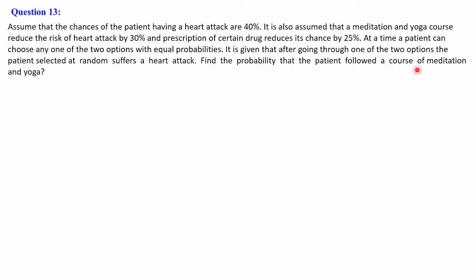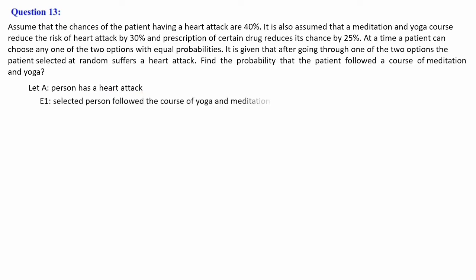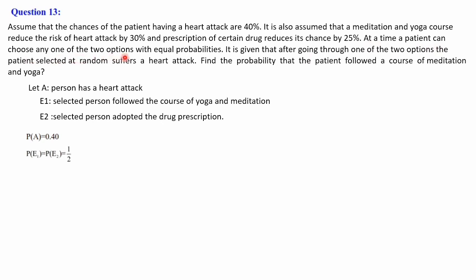Let A be the event of a person suffering from a heart attack. E1 means the selected person is doing yoga and meditation, and E2 means the selected person is using drugs (medicines). P(A) = 0.40, that is 40%. Since the patient chooses either option with equal probability, P(E1) = P(E2) = 1/2.